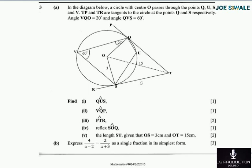Question 3A reads: in the diagram below, a circle with center O passes through the points Q, U, S, and V. TP and TR are tangents to the circle at the points Q and S respectively. Angle VQO is equal to 20 degrees and angle QVS is equal to 60 degrees.